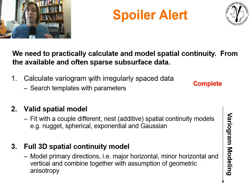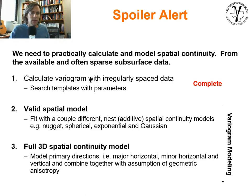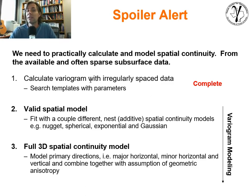That search template and all those parameters are very analogous to how you bin a histogram — how much tolerance do you allow to smooth out noise versus, if you use too much tolerance, are you starting to smooth out information? That type of balancing act, combined with the fact that we want spatial continuity models in specific directions, and we want to cope with whatever data we have available. So the next step is we need a valid spatial model — functions that are known to be valid, that don't result in spatial paradoxes or crazy estimation variances.